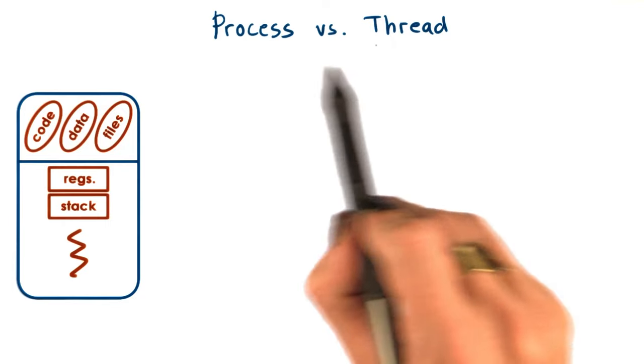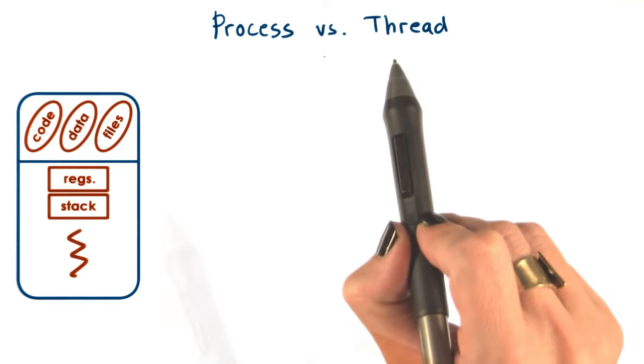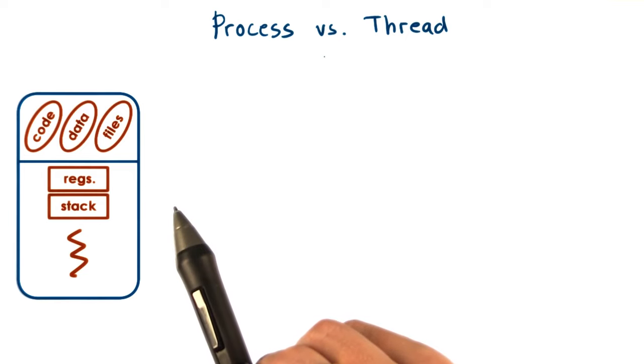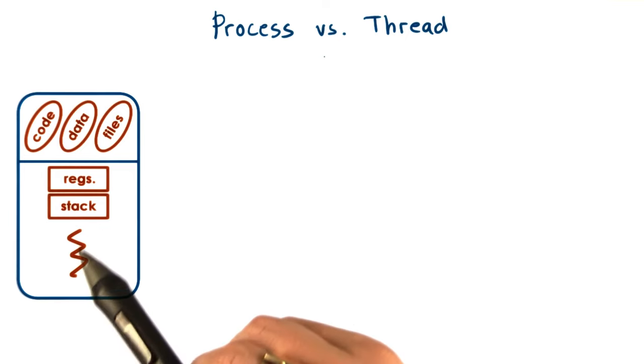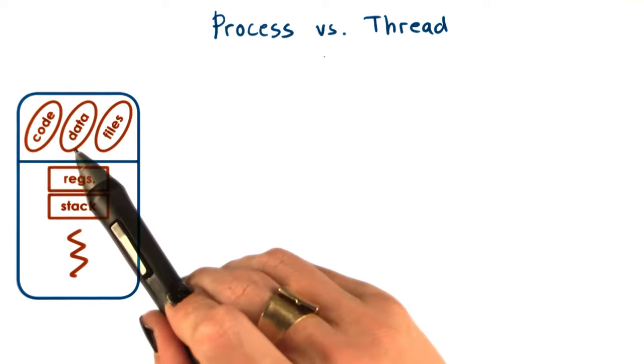Let's try to understand better the differences between a process and a thread. To recap from the previous lessons, a single threaded process is represented by its address space.